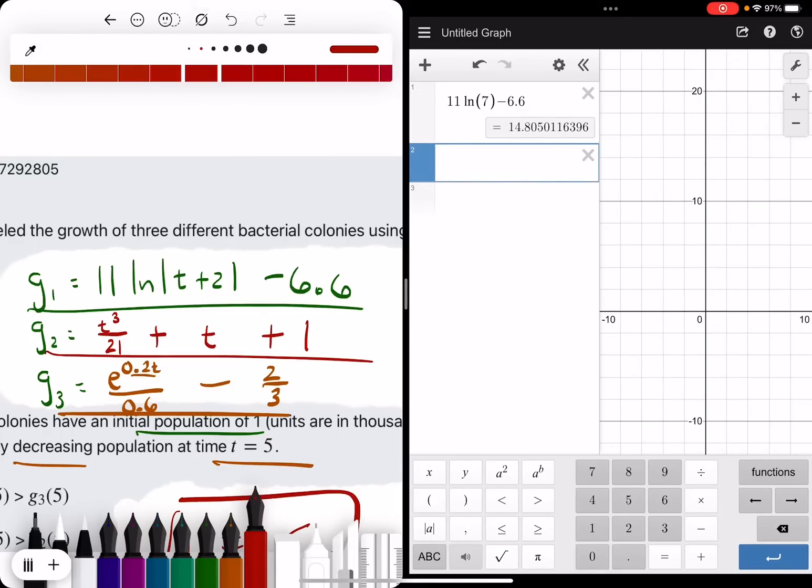Let's jump right to g2, 5 cubed over 21 plus t, which is 5, and then plus 1, so 11.9.